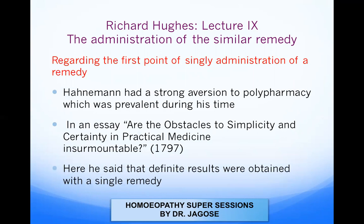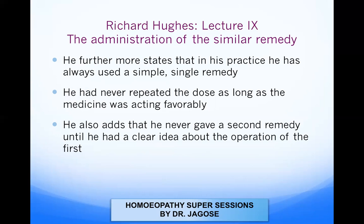Regarding the first point — administration of a single remedy — Hahnemann had a strong aversion to polypharmacy, which was prevalent during his time. In an essay in 1797, 'Are the obstacles to simplicity and certainty in practical medicine insurmountable?', he said that definite results were obtained with a single remedy. He furthermore states that in his practice, he always used a single simple remedy.